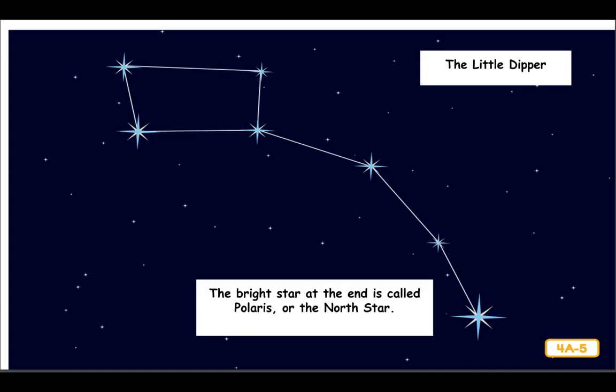The Big Dipper has a friend called the Little Dipper. The Little Dipper also contains seven stars. The bright star at the end of the handle is special - it is called Polaris, or the North Star. Unlike other celestial bodies, the North Star basically stays in the same place in the sky as we observe it from Earth, always in the north.